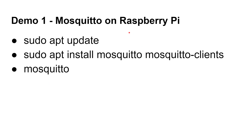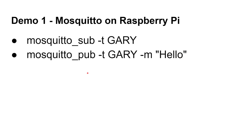What we're going to do is go over to the Raspberry Pi and, first of all, install an MQTT server called Mosquitto. To do that, you just run sudo apt update, then sudo apt install mosquitto and mosquitto-clients. Then we're going to run the Mosquitto server. I'm assuming you're familiar with installing apps on the Raspberry Pi.